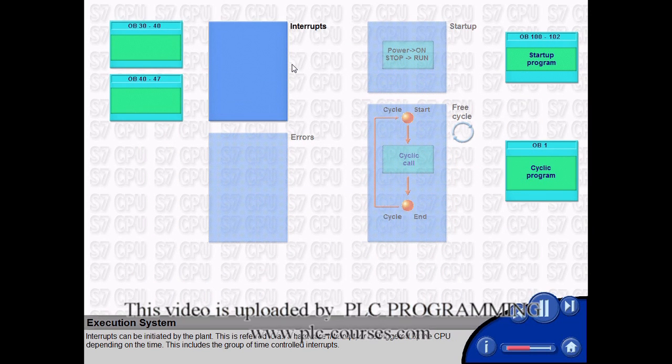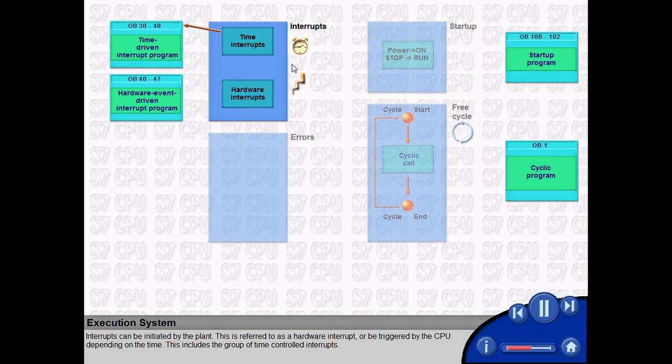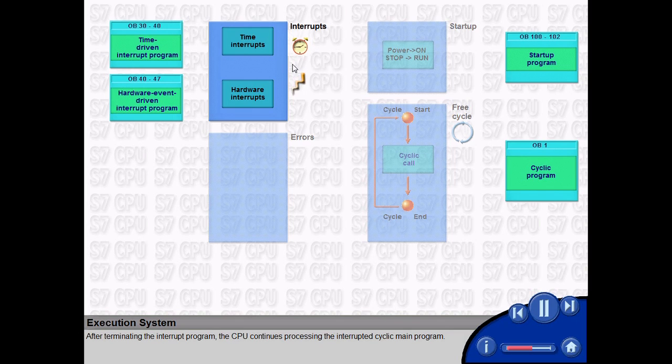Interrupts can be initiated by the plant, this is referred to as a hardware interrupt, or be triggered by the CPU depending on the time. This includes the group of time-controlled interrupts. After terminating the interrupt program, the CPU continues processing the interrupted cyclic main program.